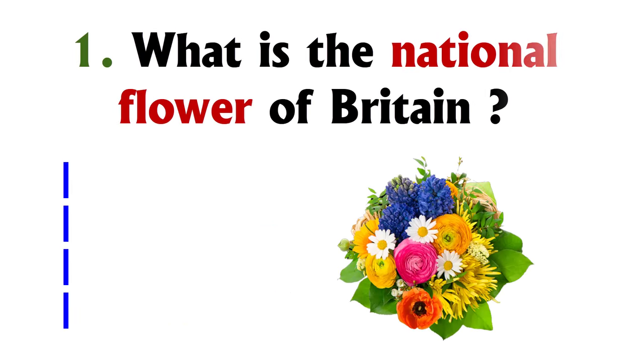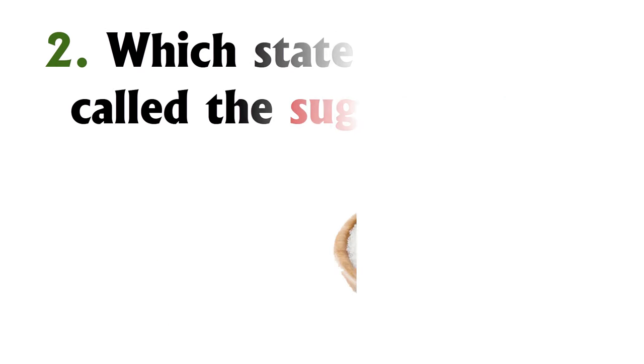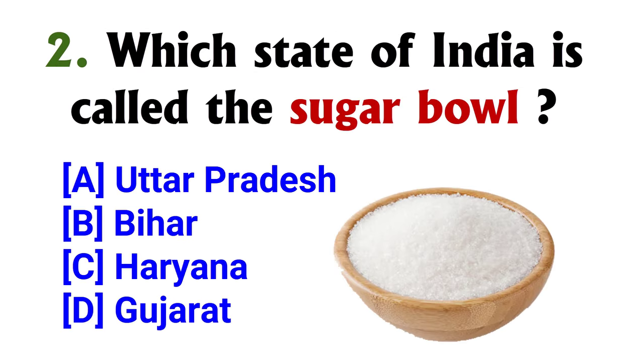What is the national flower of Britain? Option C, Rose. Which state of India is called the Sugar Bowl? Option A, Uttar Pradesh.